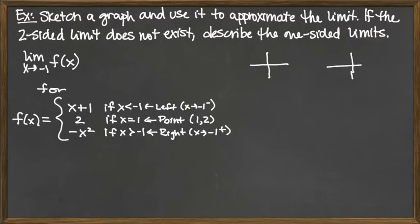The middle piece is simply a point, so it gives us a solid dot on the final graph. The top piece, y equals x plus 1, is a line with y-intercept positive 1 and slope 1. It goes through the y-intercept at positive 1, and the x-intercept is at negative 1. That would be the graph of that line.